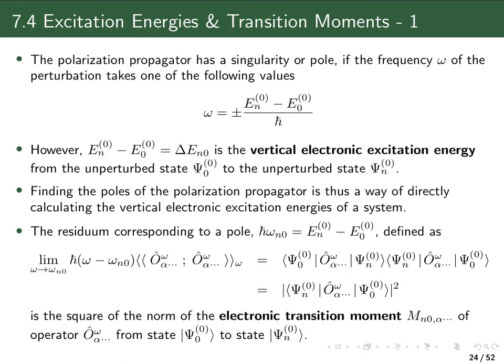We denote that by delta E n zero — the vertical electronic excitation energy — which is the energy difference between the unperturbed states, the ground state and the excited state. So if the energy of the incoming photon is equal to this excitation energy, then our linear response function will have a singularity or a pole.